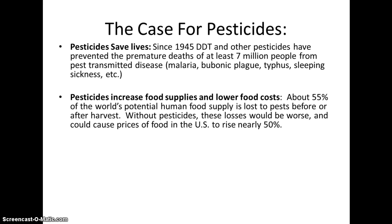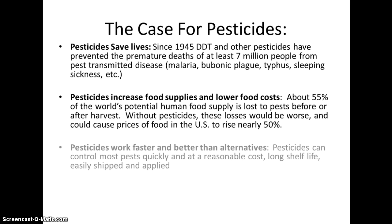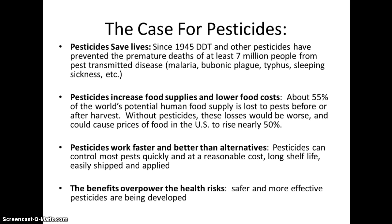About 55% of our food supply is lost to pests either before or after harvest — and that's with using pesticides. If we did not use pesticides, food prices would rise by about 50%. Pesticides tend to work better than other alternatives, they can increase the shelf life of food, and they are easily accessible — easy to ship, purchase, and apply. So a lot of times the benefits outweigh the health risks, and safer, more effective pesticides continue to be developed.